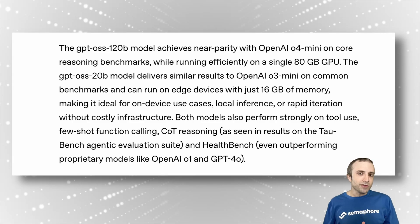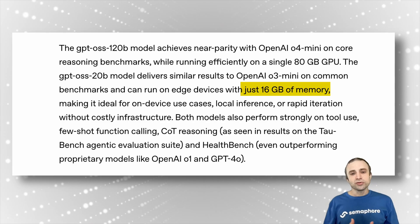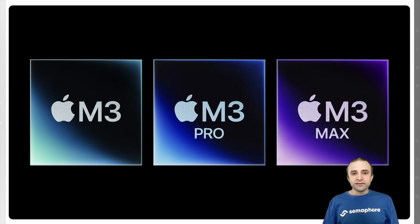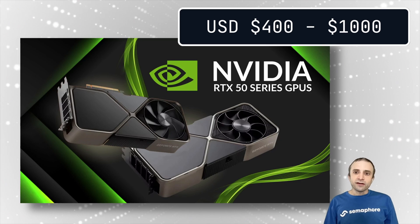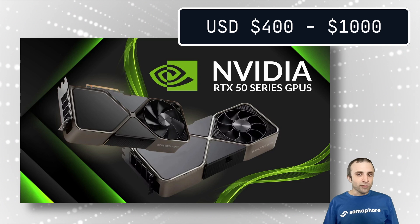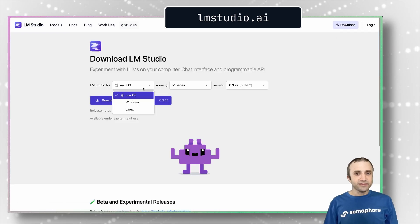The small model is meant to run on laptops and desktops — as long as you have 16 gigabytes of RAM, you should be able to run the model. You can also get pretty good performance on an Apple machine with an M3 Max chip and 32 gigabytes of RAM. On desktops, an NVIDIA RTX 50 series is a good entry-point GPU to run the smaller model. LM Studio is a desktop application that runs on Windows, Linux, and macOS. It's not open source, but it's one of my favorites.